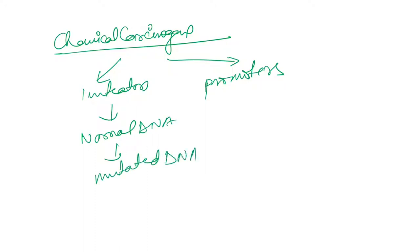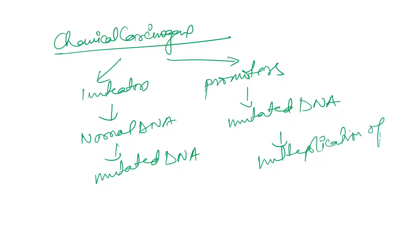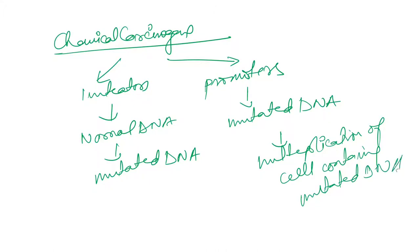And promoters — what they do is help in the multiplication of mutated DNA. So initiators change normal DNA into mutated DNA, and promoters start from mutated DNA and help in the multiplication of cells containing mutated DNA.